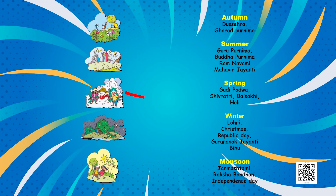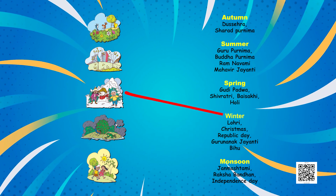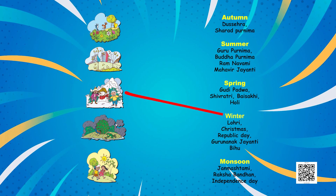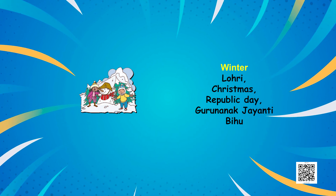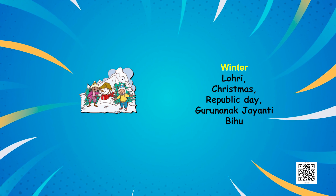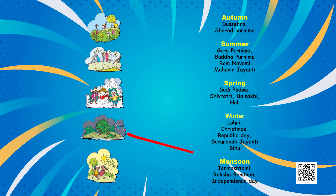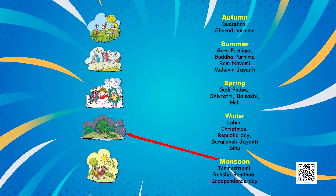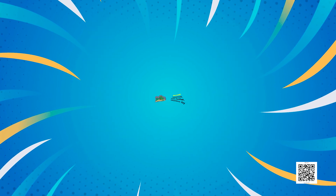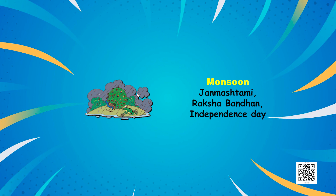In the third picture I can see a snowman built by two children who are wearing many layers of clothing. It is the winter season, and we celebrate festivals like Christmas, Lodi, Republic Day, Guru Nanak Jayanti and Bihu in this season. The fourth picture shows a dancing peacock and a hopping frog — and yes, those are raindrops! So this must be the rainy season, or monsoon. We celebrate festivals like Janmashtami, Rakshabandhan and Independence Day during the monsoon season.